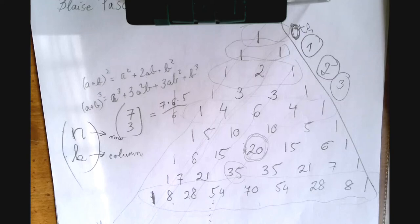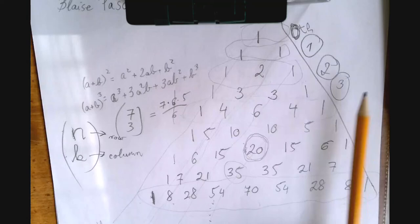Let's see some more cool stuff. What happens if you add the rows? 1 plus 1, 2, 1 plus 2 plus 1, 4, 8, 16, 32, 64, and so on. So the rows all add up to a 2 power.